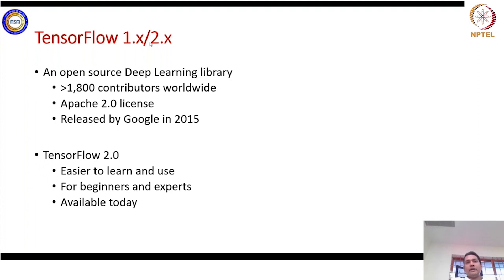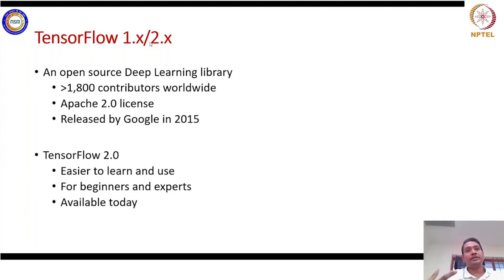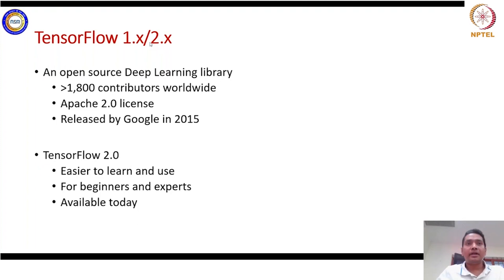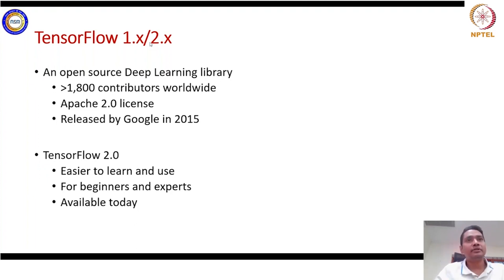TensorFlow 1 was heavily based on making graphs and then introducing the lazy execution of the graphs, which is similar to the distributed programming paradigm of Spark. But in TensorFlow 2, that paradigm of lazy execution has been transferred to eager execution. Eager execution means as soon as you define any operation, it will be evaluated instantly.